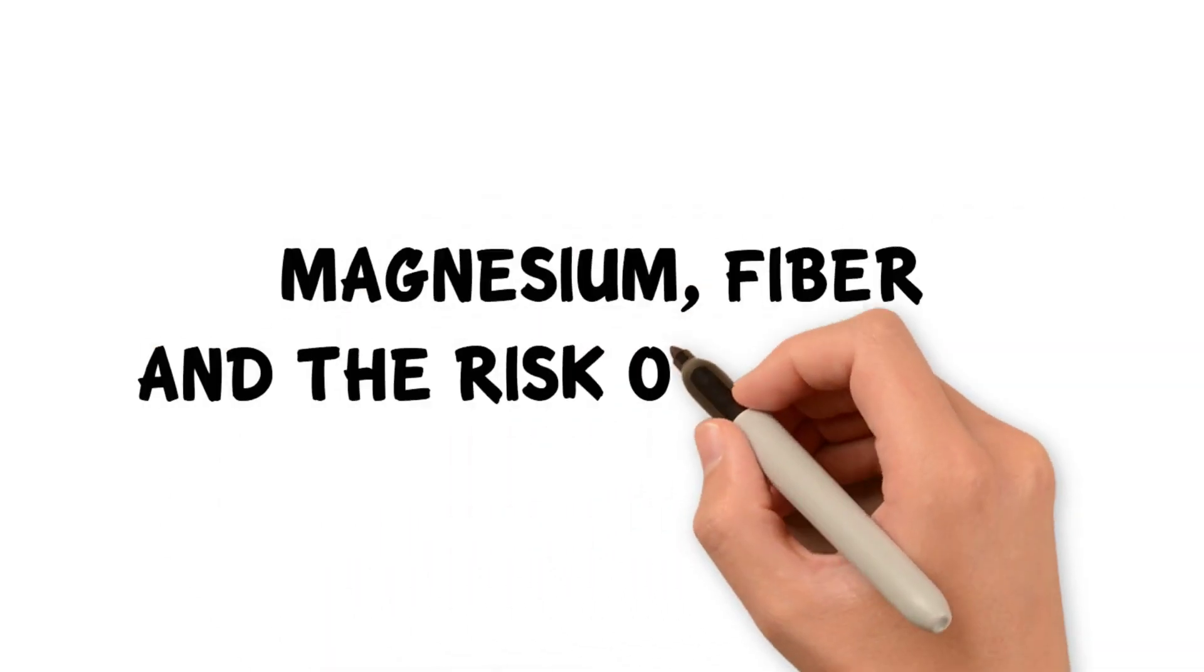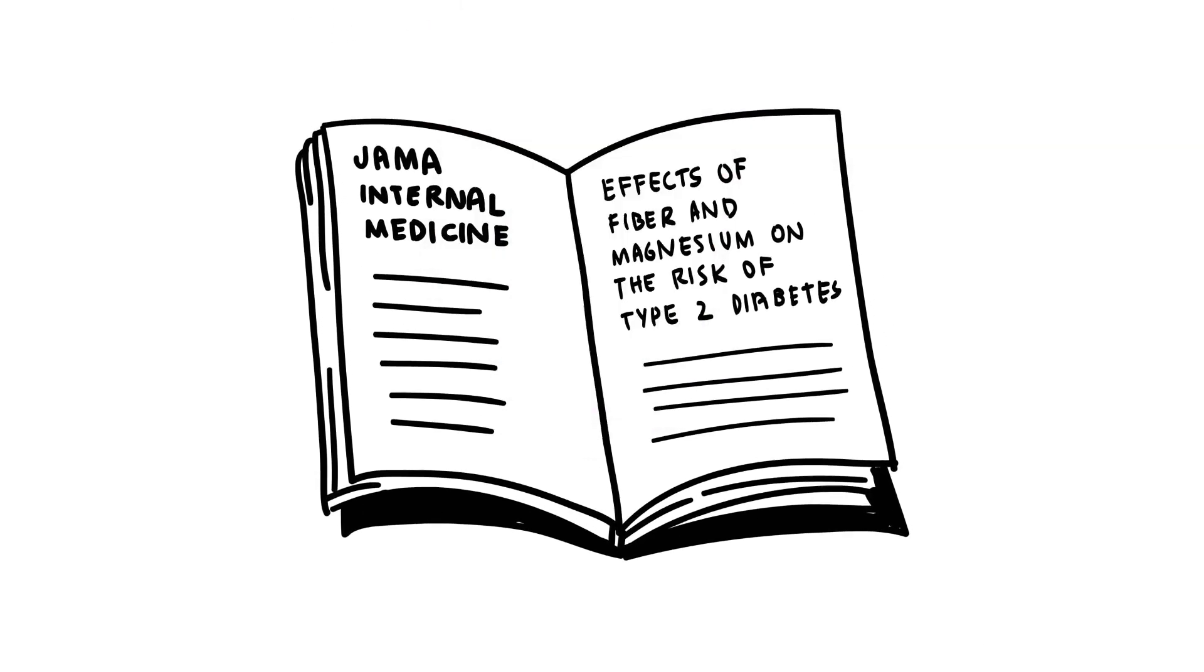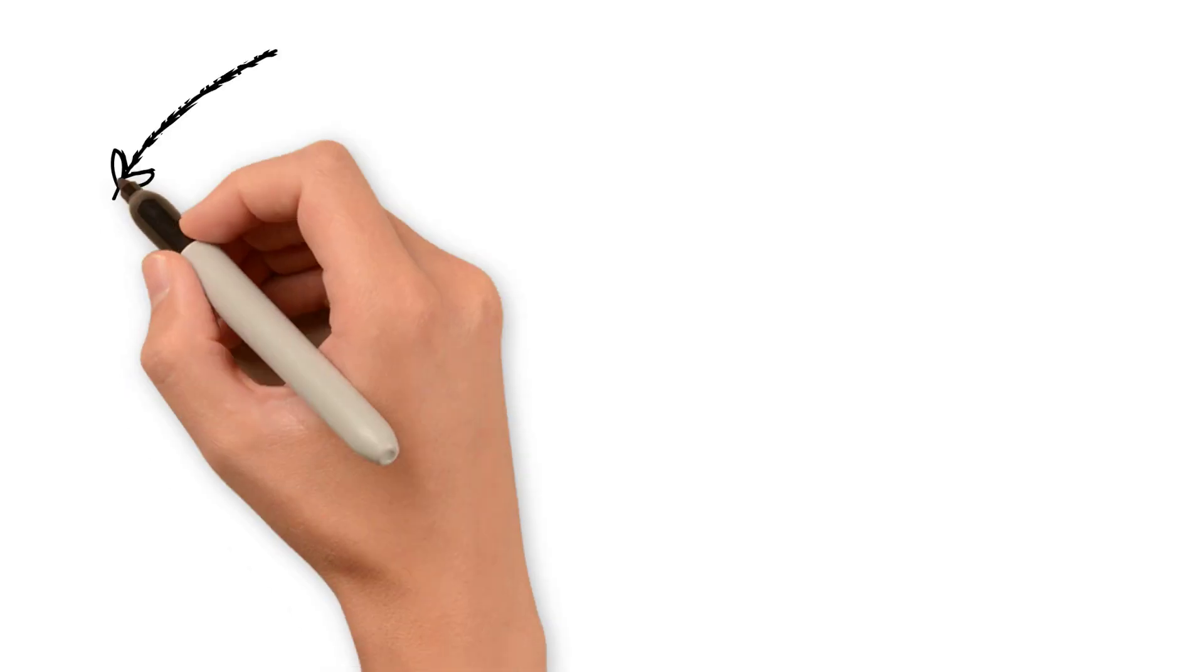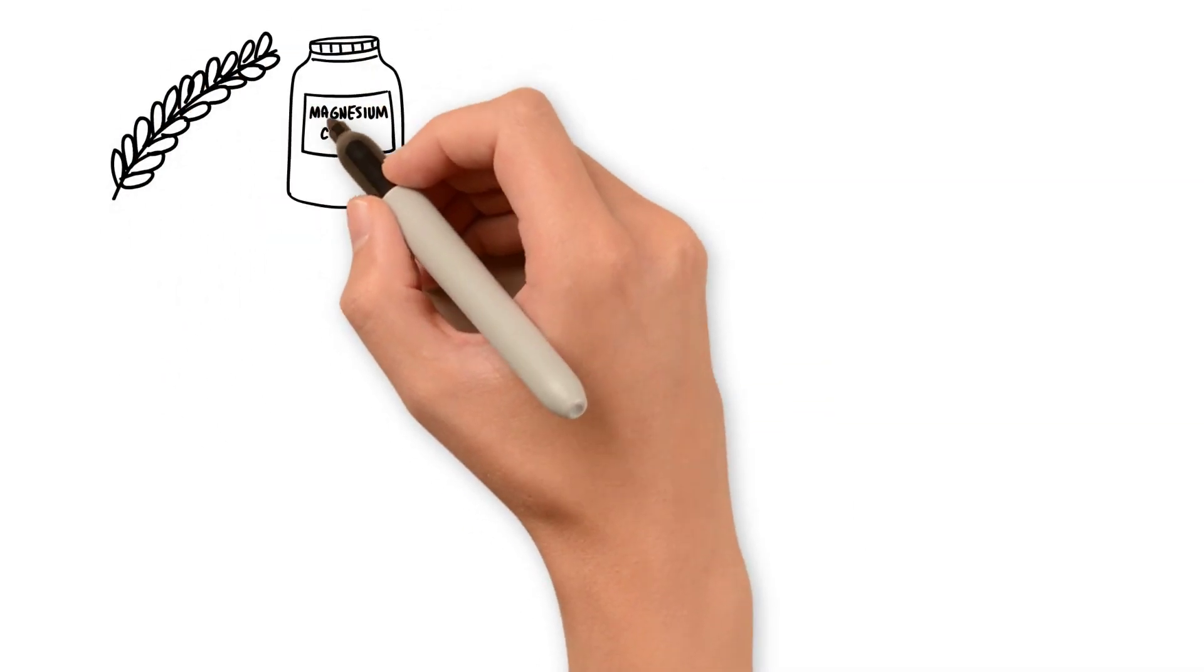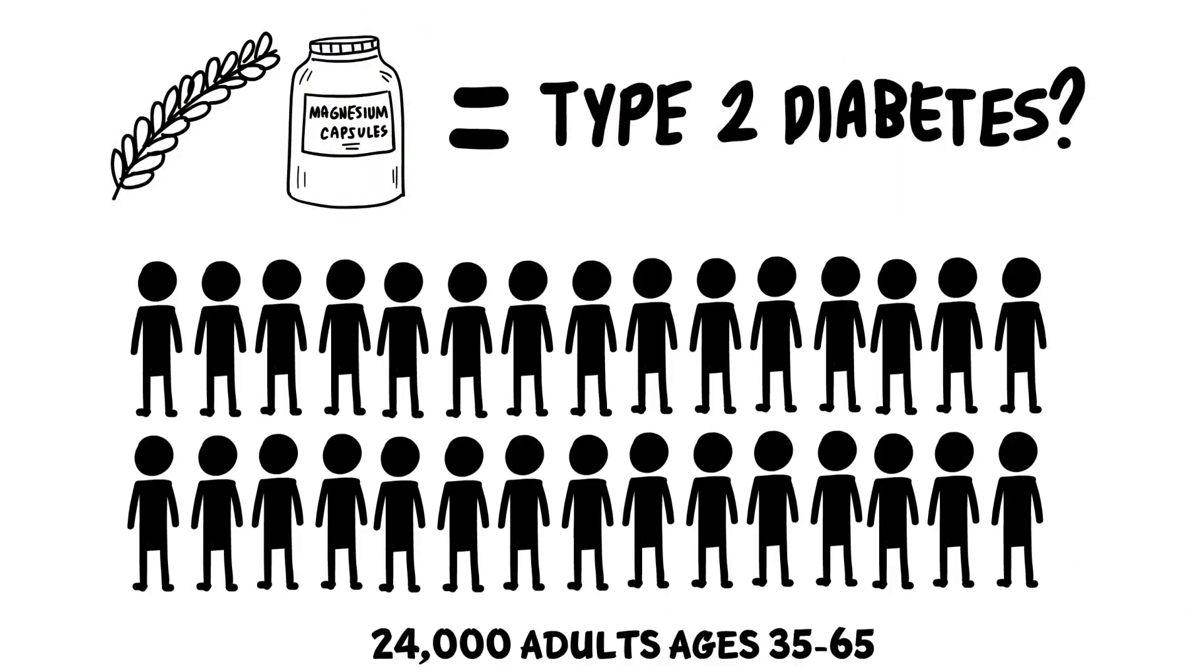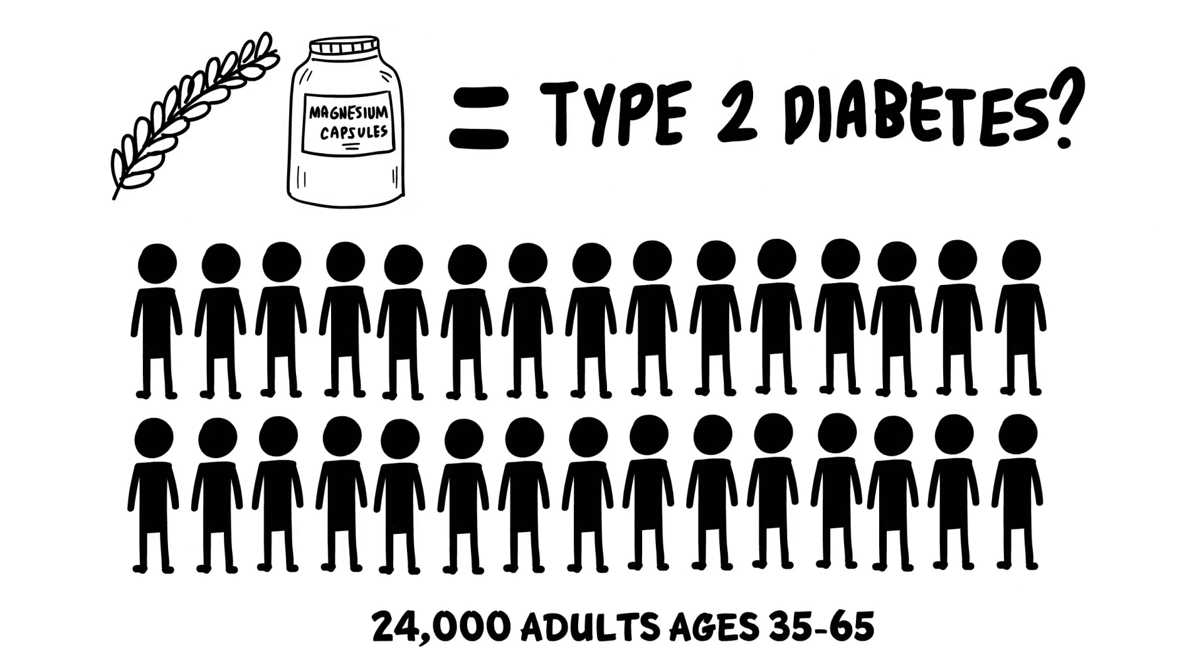Magnesium, fiber, and the risk of diabetes. A 2007 paper published in the journal JAMA Internal Medicine investigated the effect of dietary fiber and magnesium on the risk of Type 2 diabetes. This paper described a prospective study involving over 24,000 adults aged between 35 and 65 years,